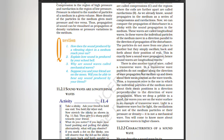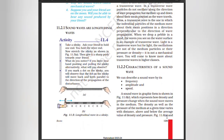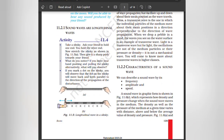There is also another type of wave called a transverse wave. In a transverse wave, particles do not oscillate along the direction of wave propagation but oscillate up and down about the mean position as the wave travels. Thus a transverse wave is one in which the individual particles of the medium move about their mean position in a direction perpendicular to the direction of wave propagation. When we drop a pebble in a pond, the waves you see on the water surface are an example of a transverse wave. Light is a transverse wave, but for light the oscillations are not of the medium particles or their pressure or density — it is not a mechanical wave. You will learn more about transverse waves in higher classes.